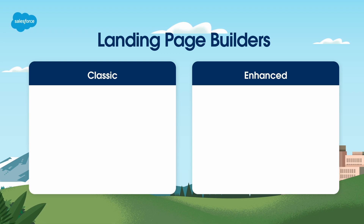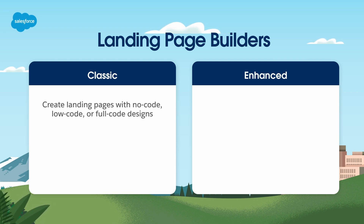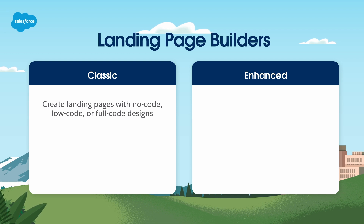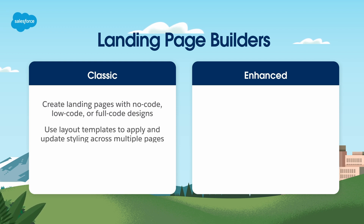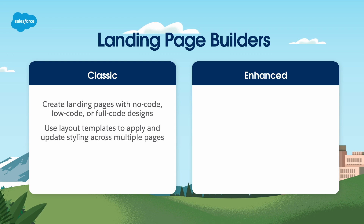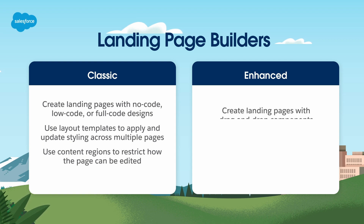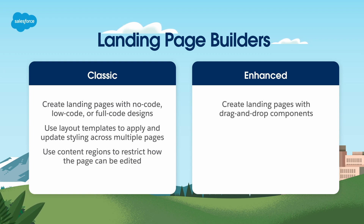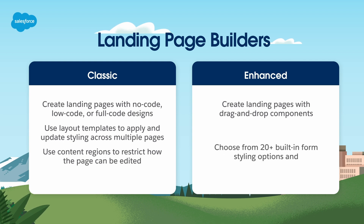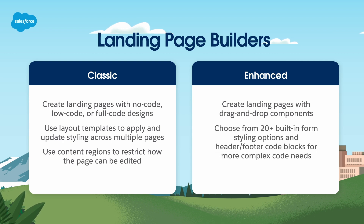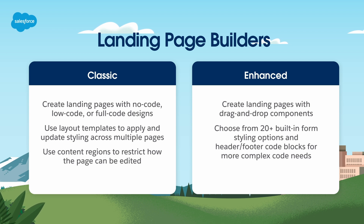The classic builder provides greater flexibility for custom code, allowing you to create landing pages with no-code, low-code, or full-code designs. Layout templates enable quick application and updating of styling across multiple pages, while content regions control editing restrictions. In contrast, the enhanced builder creates landing pages through drag-and-drop components and offers over 20 built-in style options for more complex code needs, such as adding tracking code using header and footer code blocks or customizing cookie banners.